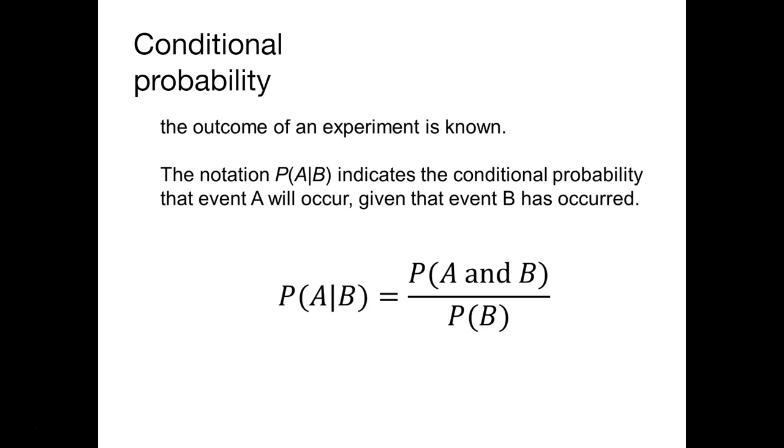Conditional probabilities are also really helpful for us. This is oftentimes when we know something occurred before we're calculating the probability of something happening. Here we can denote that by the probability of A given B. We say given when we see the pipe symbol in our notation. The notation probability of A given B indicates the conditional probability that event A will occur, given that event B has already occurred. We can calculate that by the probability of A and B happening, divided by the probability of B. This conditional probability is really helpful to us, particularly when we're talking about multiple events happening.